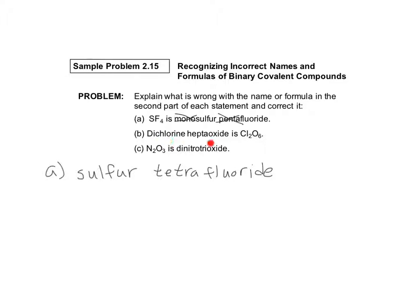In B part, the name is correct, but the formula is incorrect. So we've got to give the correct formula. Let's see what we have going on here. Dichlorine, so Cl2, right? Di is the prefix for two.